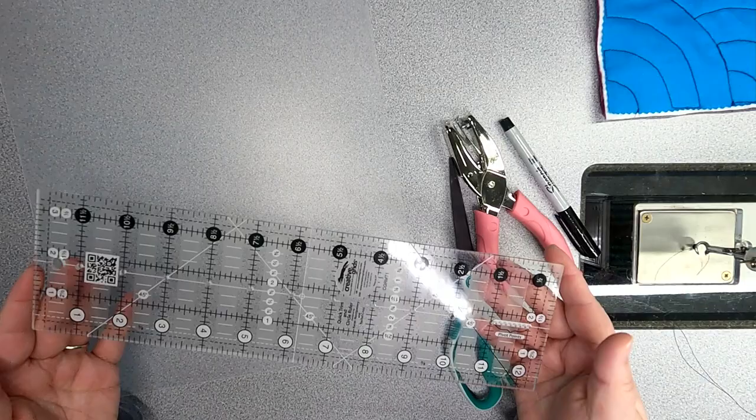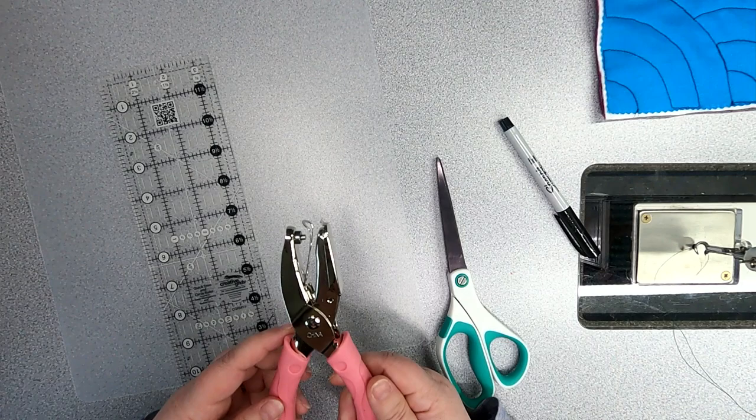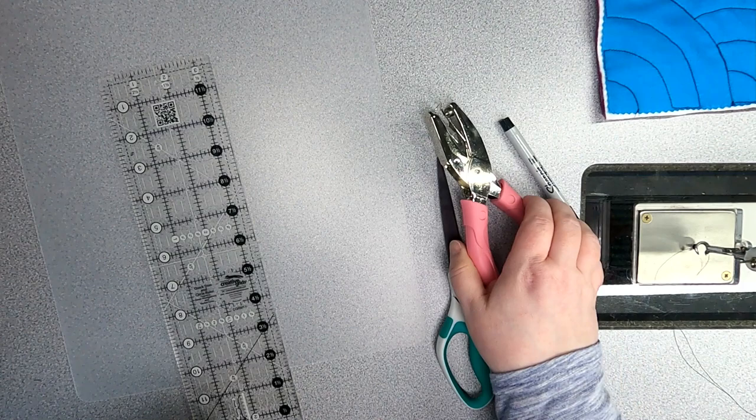You're also going to need a ruler with some markings on it and a quilting ruler will do. This is a 1/8th inch hole punch that is going to punch all the little holes that we need in the template, and then you'll need some scissors and just a marking marker.